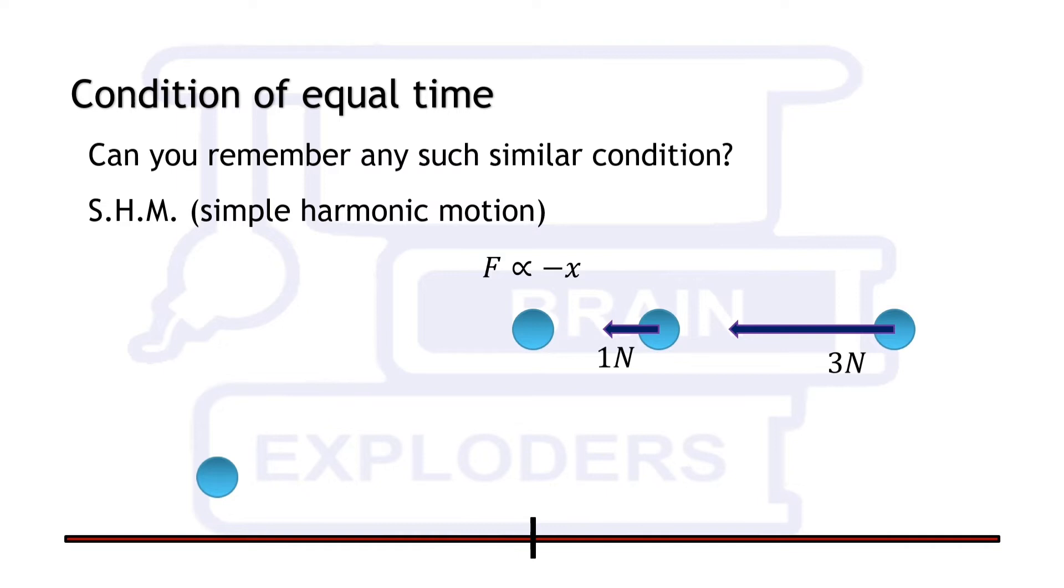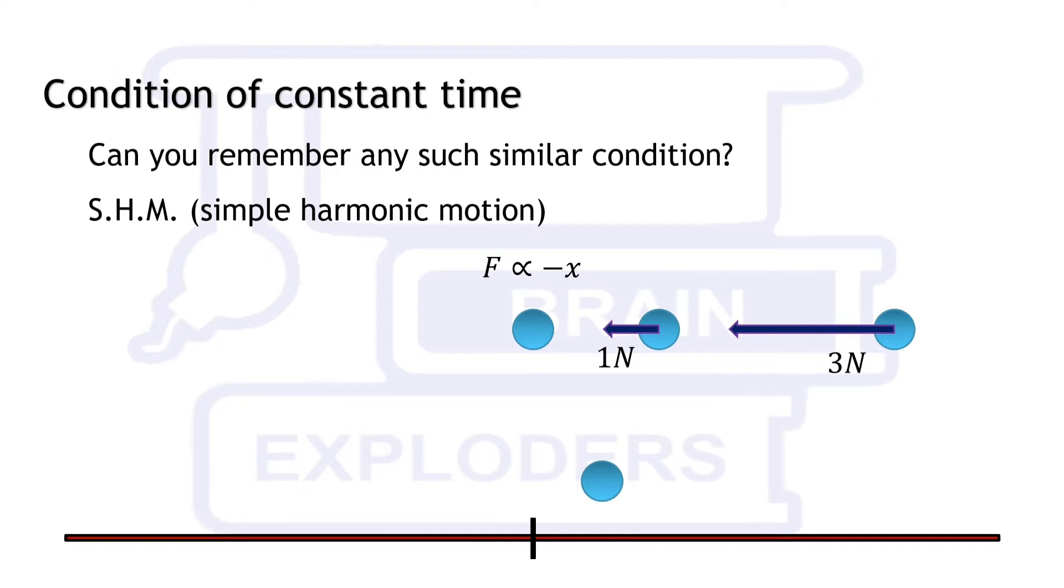Again, a force starts acting on it towards mean position which retards the object. After reaching the same distance on the other side, it stops and starts moving back to its mean position, and the motion continues.